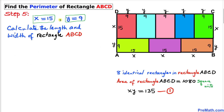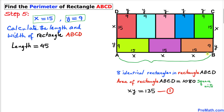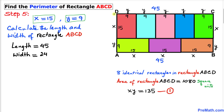So our length x is 15 and width y is 9. Now we calculate the dimensions of the big rectangle ABCD. The length is 15 plus 15 plus 15 equals 45, and the same applies to the opposite side, which is also 45. The width is 9 plus 15, which equals 24.